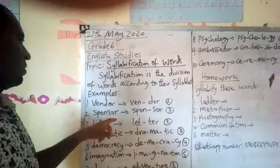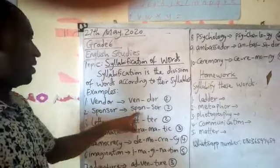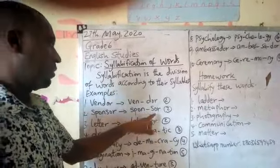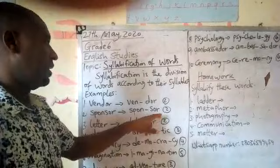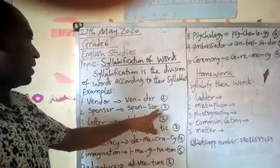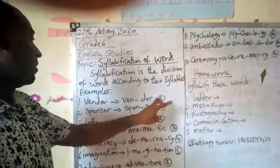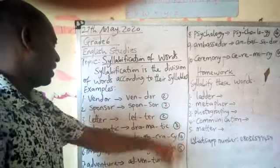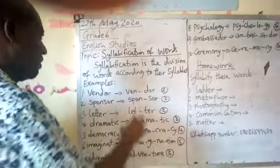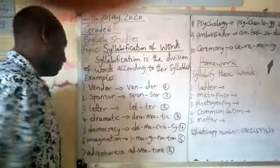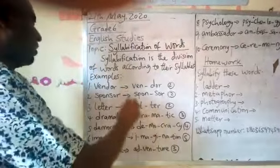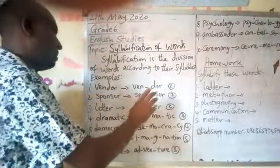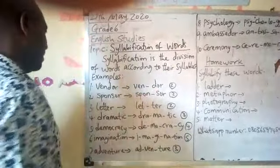Number two: sponsor. Sponsor. This number two has two syllables. Sponsor — it is also called a bisyllabic word.